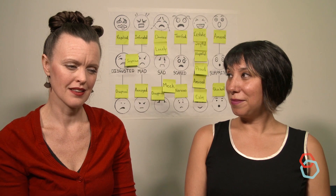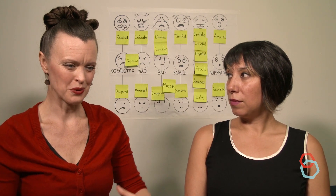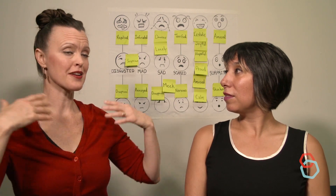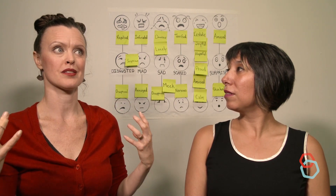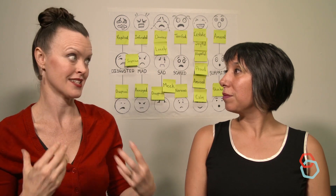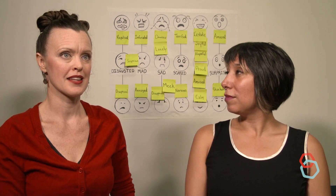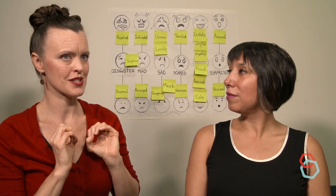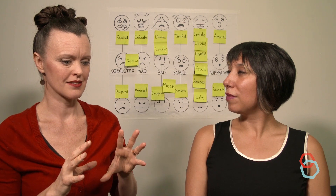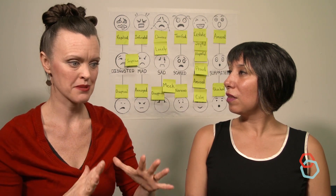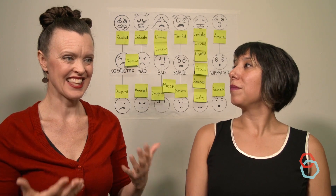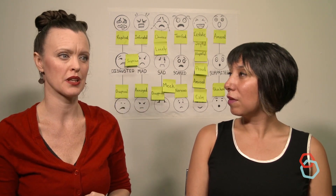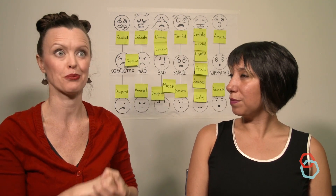A lot of the time when we go in and do theater residencies, the teachers express a sort of amazement at how well the students remember the sequence of the story and the details of the story. And I feel like this chart can really be used as a tool for having students ask themselves the kinds of questions they need to ask along the way in order to really understand why the things in the story happen when they happen.